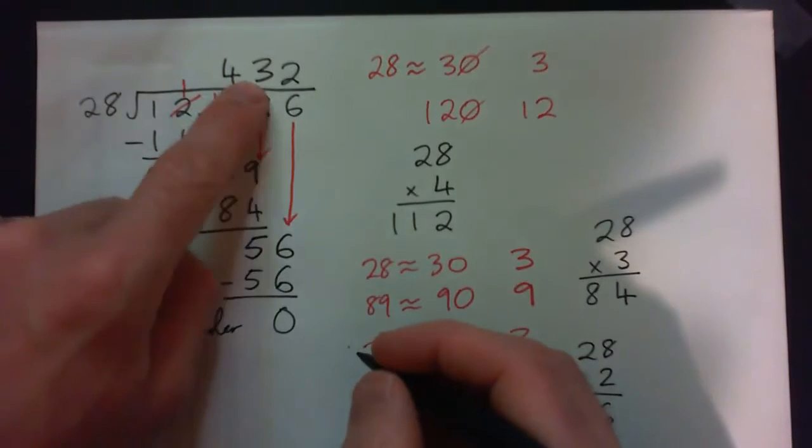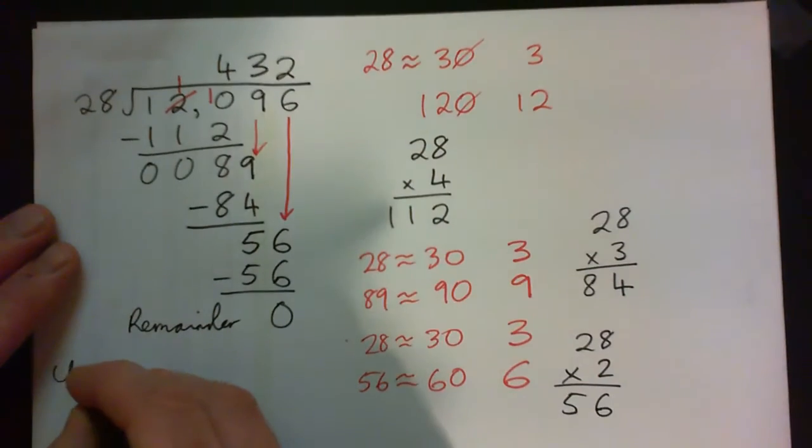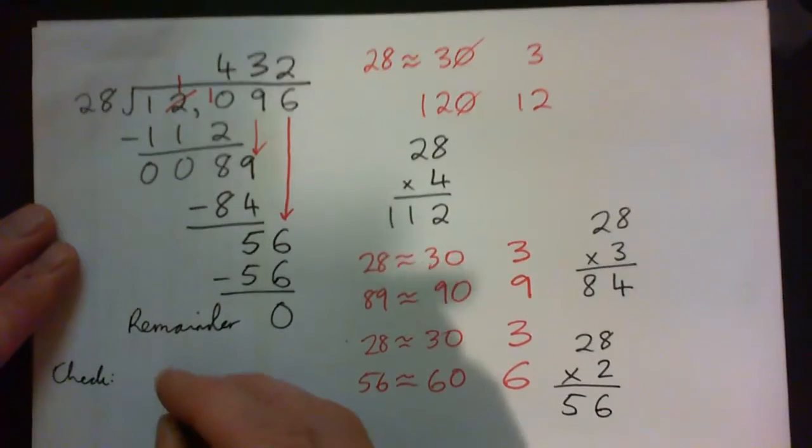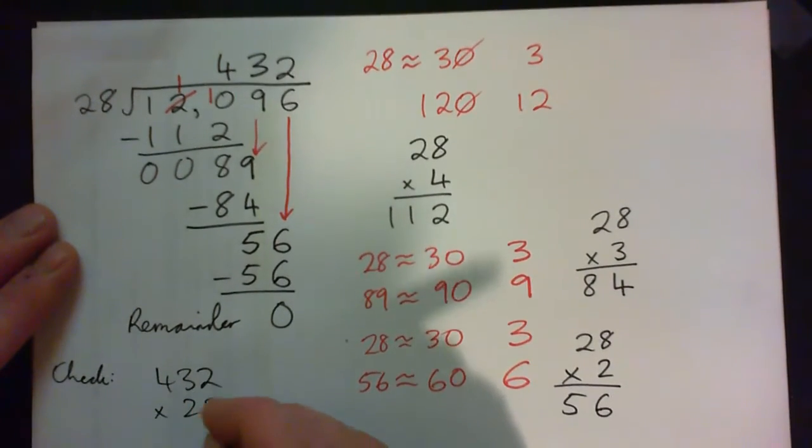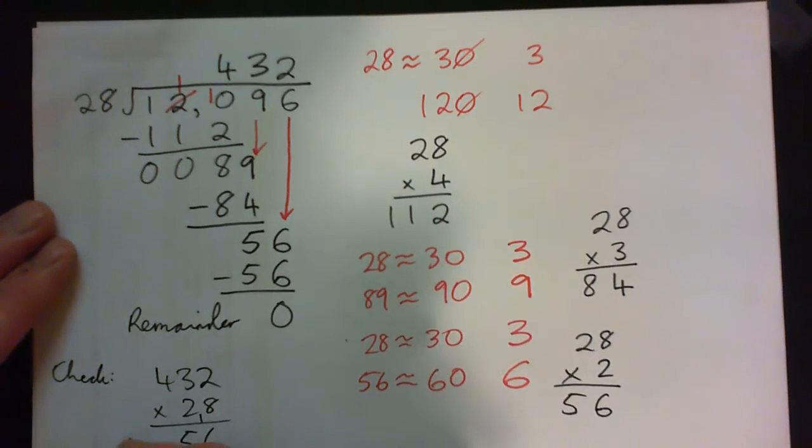So our answer is 432. And if we want to check that, what would you do? 432 times 28. 8 times 2 is 16, carry 1. 24 and 1 is 25, carry 2. 32 and 2 is 34. Down is 0. Multiply by 2. 2 times 2 is 4. 2 times 3 is 6. 2 times 4 is 8. Add the numbers. 6, 9, 10, carry 1. 12, 12,096. So it all worked out.